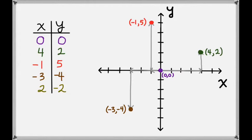Now let's look at the point (2, -2). This time our x-value is positive, so we'll go to the right 2. And our y-value is negative, so we'll go down 2. This gives us the point (2, -2).